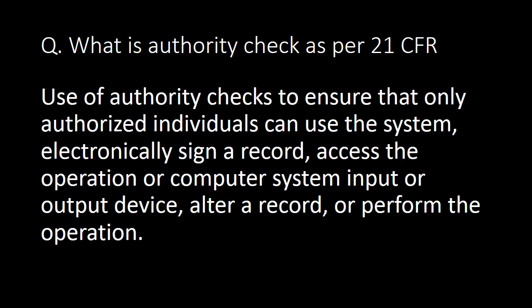The next important question: what is an authority check as per 21 CFR Part 11? An authority check is the use of controls to ensure that only authorized individuals can use the system, electronically sign the record, access the operation or computerized system input or output device, alter a record, or perform the operation.